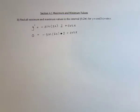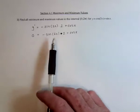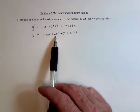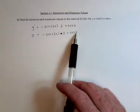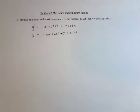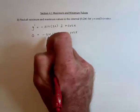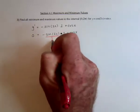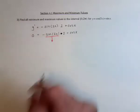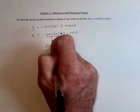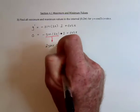So set the derivative equal to 0, and we've got a slight problem in that this has a 2x in it, and this only has an x in it. So we need a trig identity for sine of 2x, and the trig identity for that is 2 times sine of x times cosine of x.